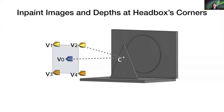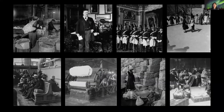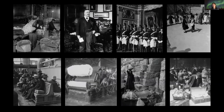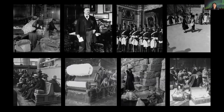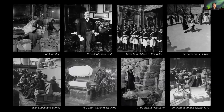Thus, we can synthesize grayscale images and depth at the four corners of a desired headbox. Finally, we simulate the slow glass experience, peeking into a large variety of historical scenes.